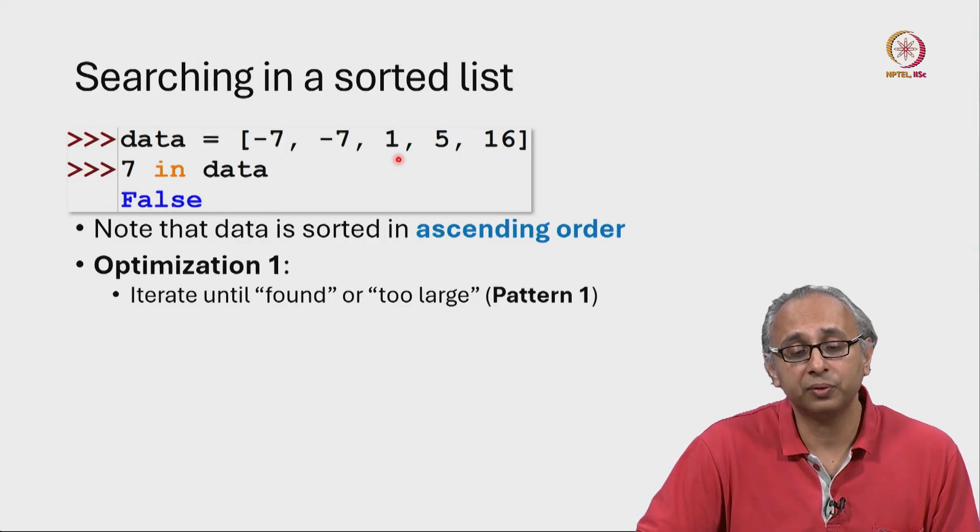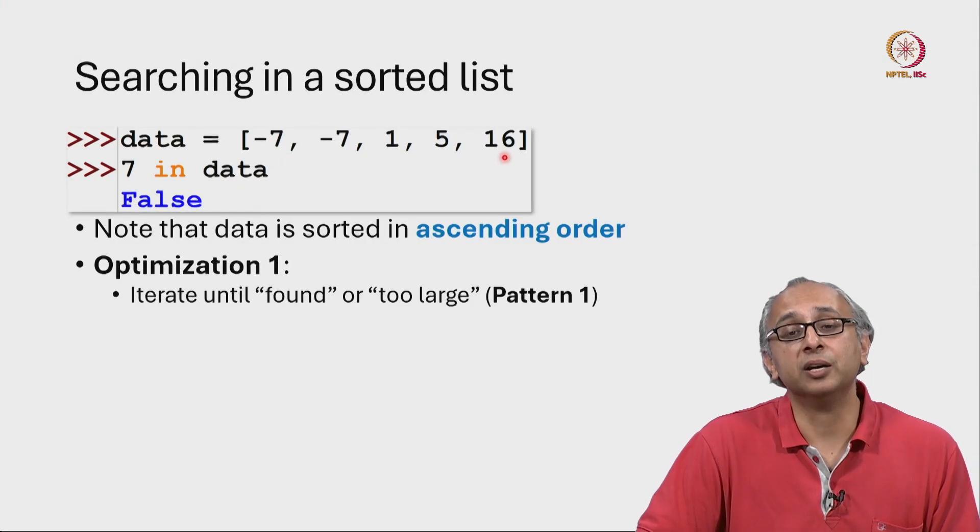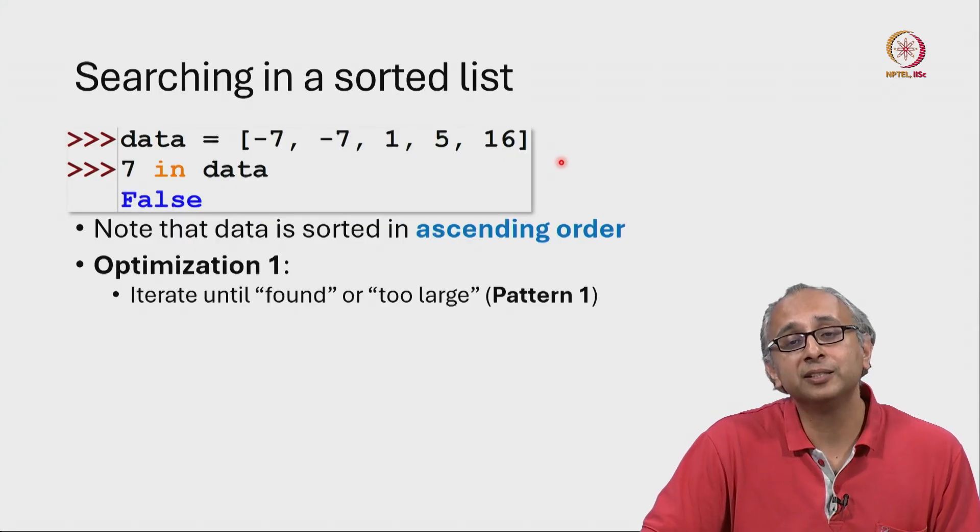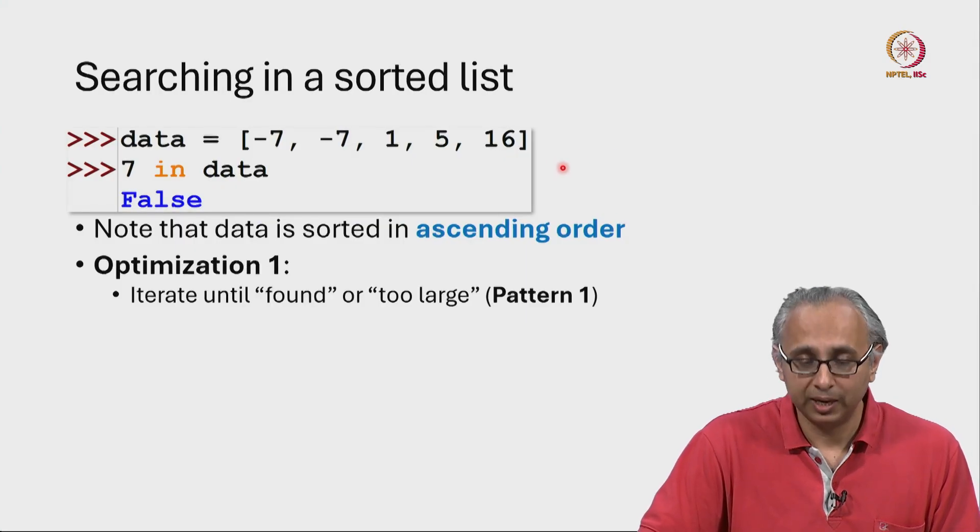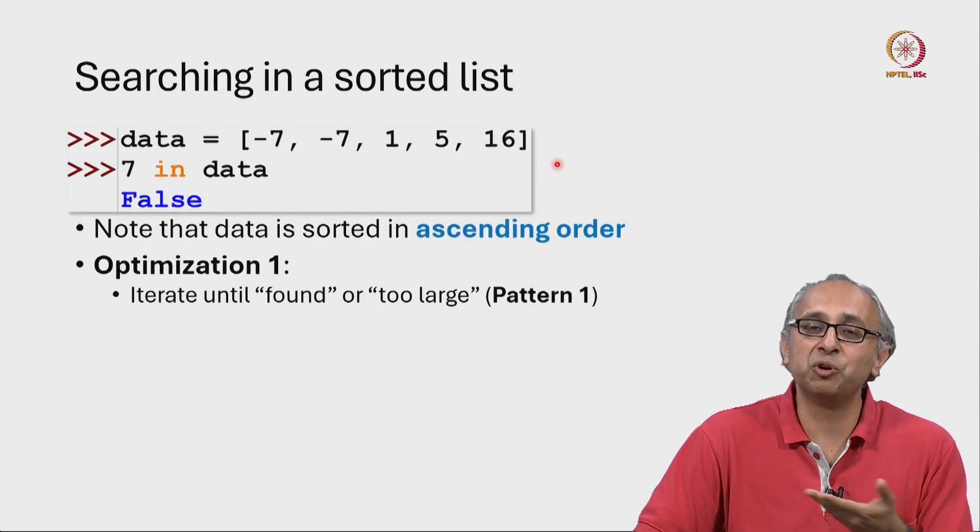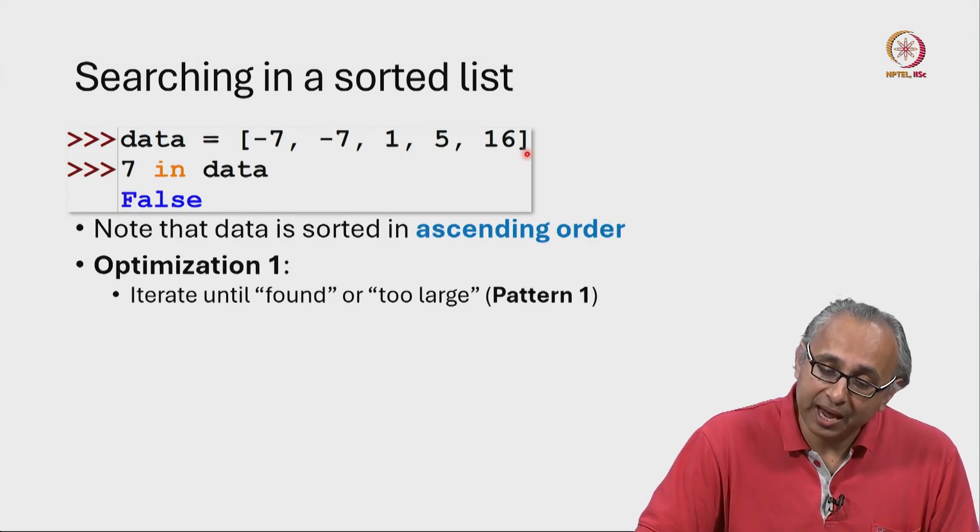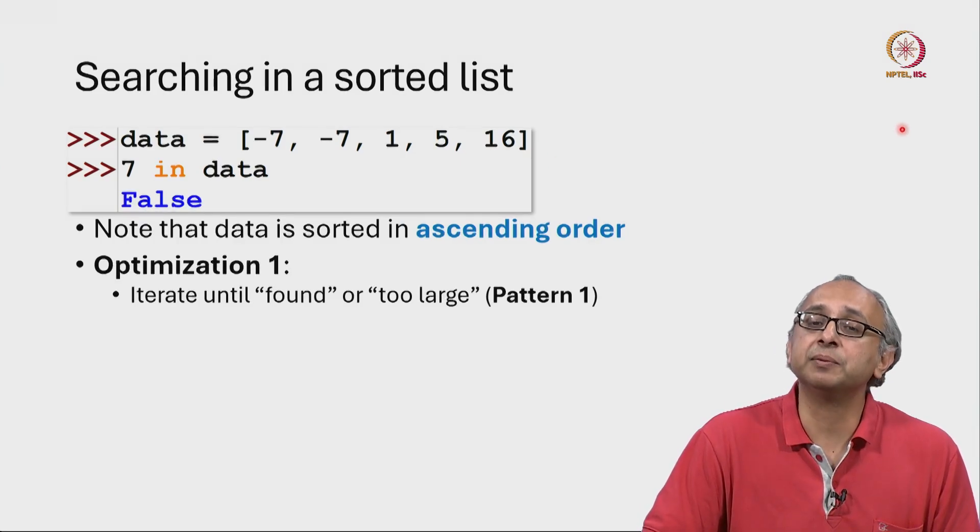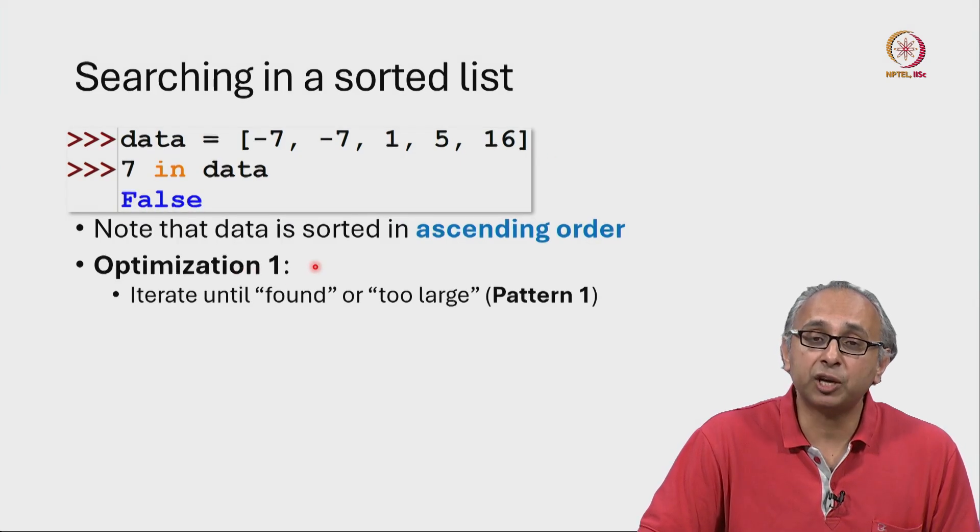that is too small, that is too small, that is too large, and there is no point searching further. Now in this particular list there are no more items, but imagine there were lots of other items—then this first optimization could save us some effort.